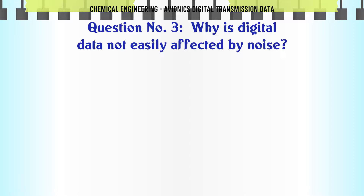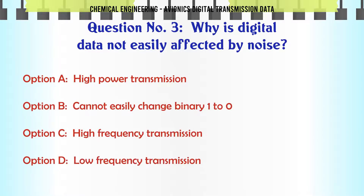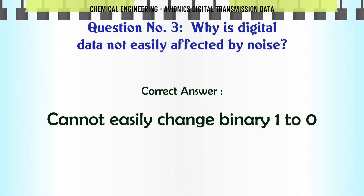Why is digital data not easily affected by noise? A: High power transmission. B: Cannot easily change binary 1 to 0. C: High frequency transmission. D: Low frequency transmission. The correct answer is C — cannot easily change binary 1 to 0.